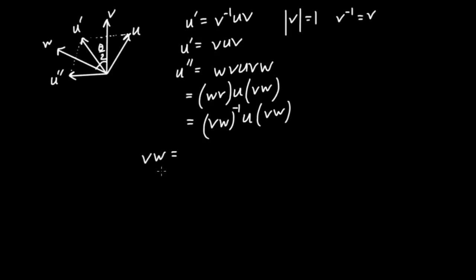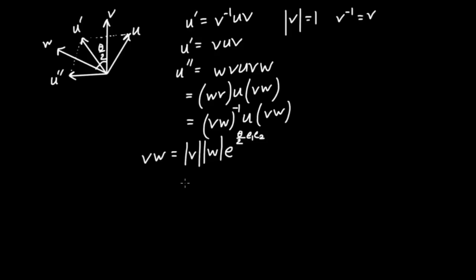Remember we had another way of writing the geometric product of two vectors: in general, it equals the length of v times the length of w times e to the power of (theta/2 times the unit bivector in the plane of v and w). In two dimensions, the unit bivector is e1 e2. Since v and w are both unit length, this formula becomes simply e to the (theta/2 times i), where i equals e1 e2. So vw equals e to the (theta/2 · i).